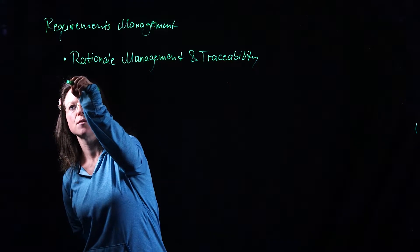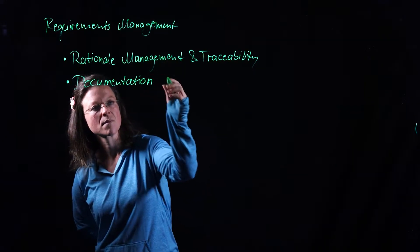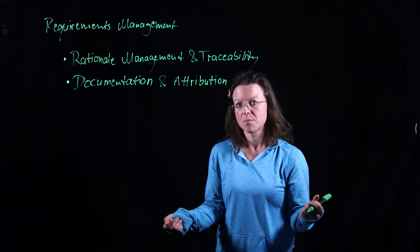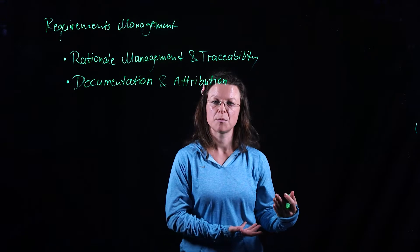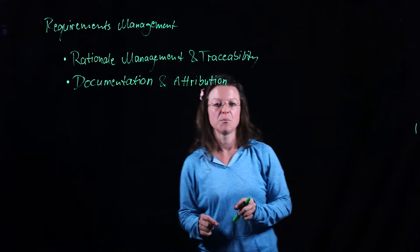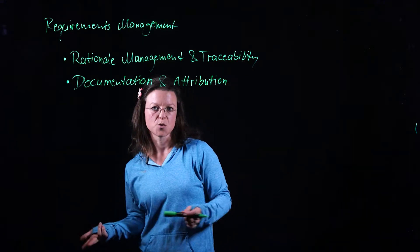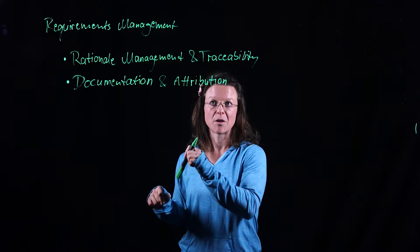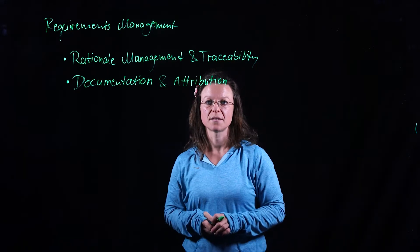The second one is requirements documentation and attribution. Documentation is the act of writing them down in the form that is most conducive to being able to work with it later on. For functional requirements, that may be use cases. For quality requirements, that may be a specification of the metrics and measures of how we're going to follow up during testing. Attribution means all the other context information that we can choose to add to a requirement: the stakeholder where it came from, the priority it has, the time by which it needs to be completed, other use cases this one references, quality requirements that are part of this specific requirement. That's the second set of subtasks.